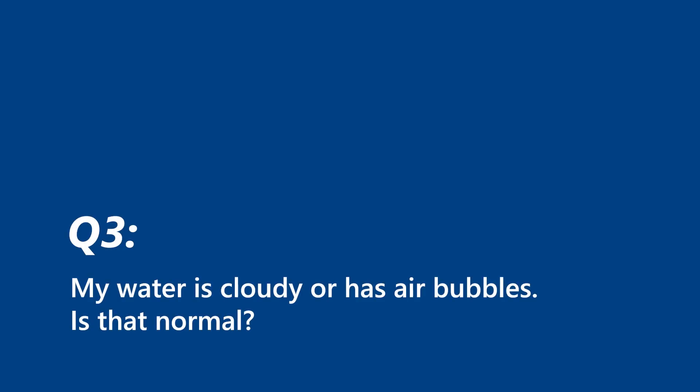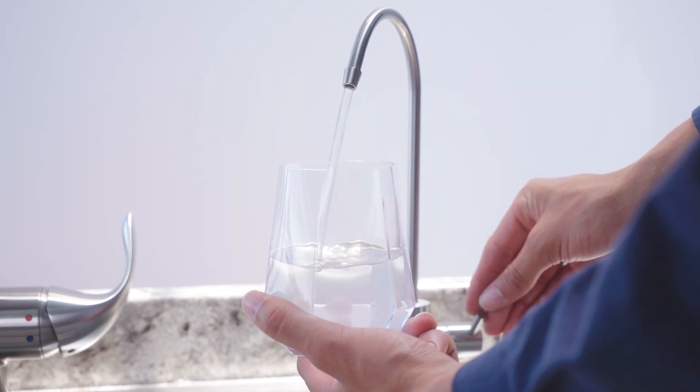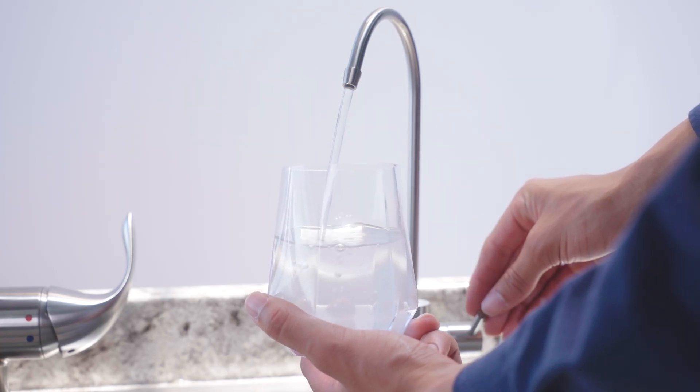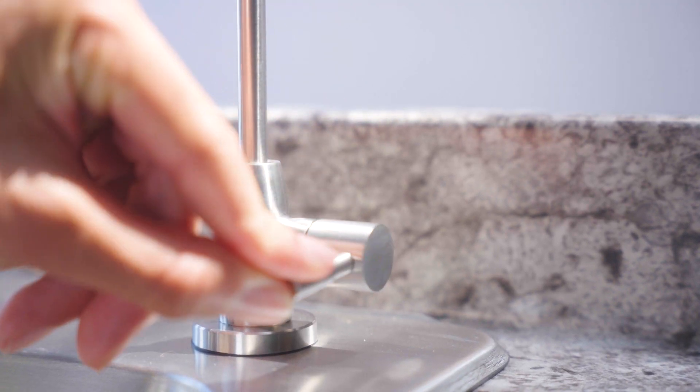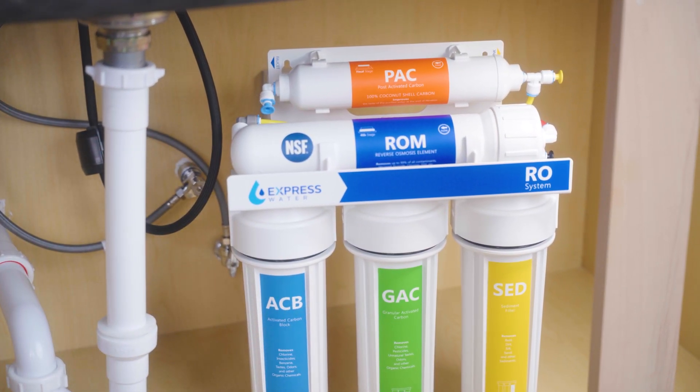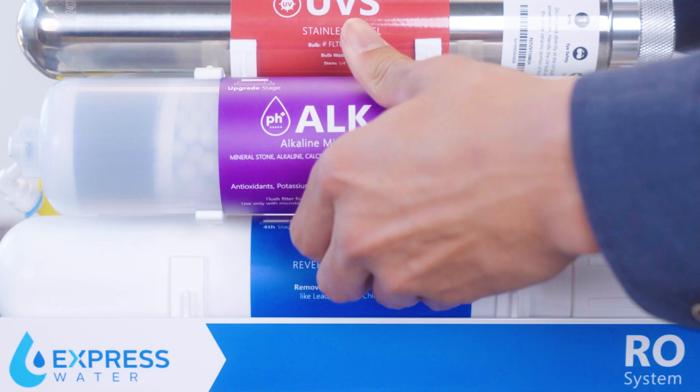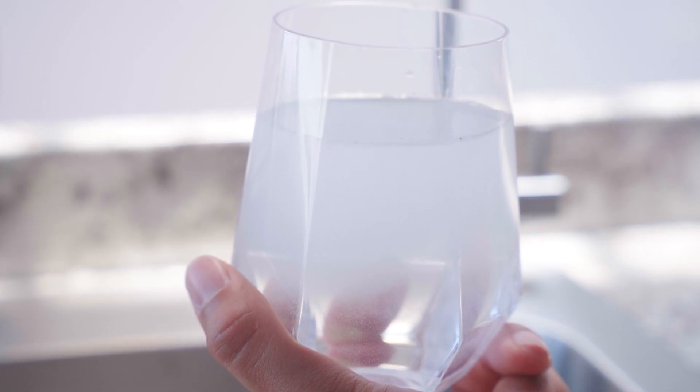Yes, especially right after installation or filter changes. This is just air trapped in the system and will clear up after a few tank refills. Run and flush the system two to three full cycles. Tilt the RO unit slightly to help trapped air escape. Alkaline filters may also introduce additional oxygen, which looks like micro bubbles.